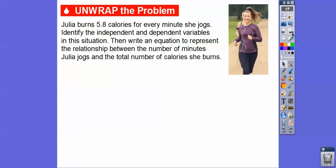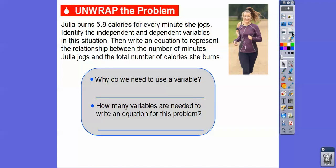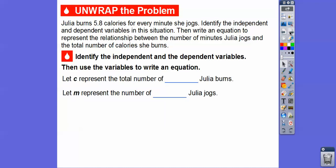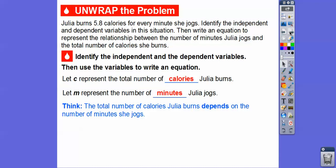So Julia burns 5.8 calories for every minute she jogs. Identify the independent and dependent variables in this situation, and then write an equation to represent the relationship between the number of minutes Julia jogs and the total number of calories she burns. There are two unknowns, so we need two variables: one for the number of calories and one for the number of minutes.